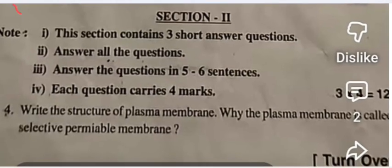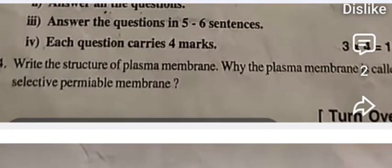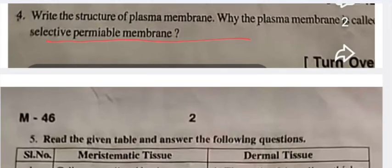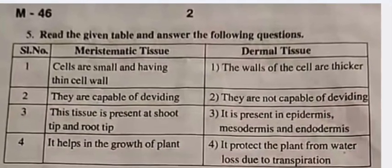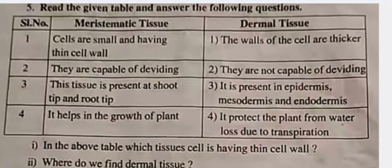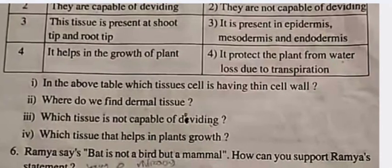In Section 2, three short answer questions are given. In 5 to 6 sentences you have to answer; these are for four marks. Question 4 is given — read it and write the answer. Question 5: read the given table and answer the following questions. In the above table, which tissue's cell is having a thin cell wall? In this way, four questions are given and you have to answer them.